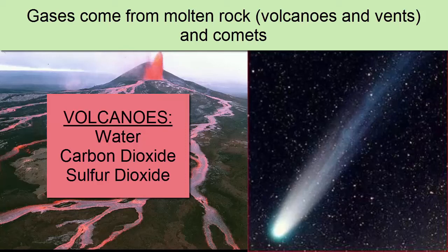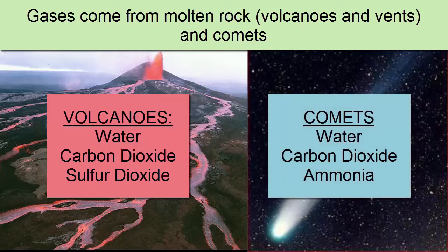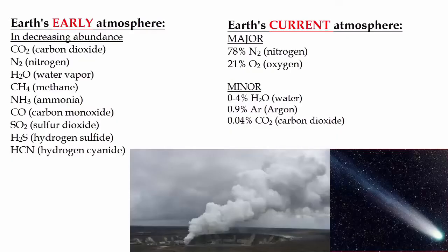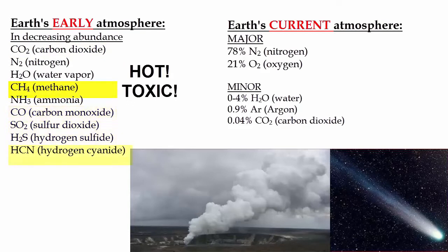Gases also entered the newly growing atmosphere from comets colliding with Earth. As we reviewed in the Earth Formation video tutorial, comets contain water, ammonia, and carbon dioxide. Here is an artist's rendition of what early Earth would have looked like with cometary and asteroid collisions and erupting volcanoes on a mostly molten surface. Early Earth's atmosphere was hot and toxic — its primary ingredient was carbon dioxide, but it also contained small amounts of sulfurous compounds, carbon monoxide, methane, and cyanide.